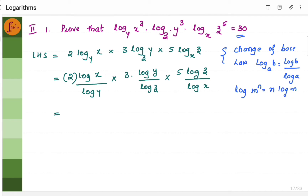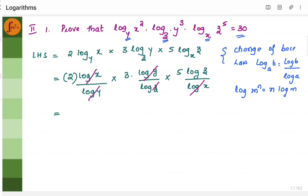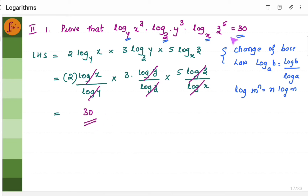Next, we will have to use the change of base law, because every base is different here — you have y, you have z, and you have x. When bases are different, we use the change of base law: log b to the base a can be written as log b by log a. So we write log x by log y, log y by log z, log z by log x. Now, log x and log x cancel, log y and log y cancel, log z and log z cancel. Finally, we are left with 2 × 3 × 5, that is 30. Hence proved.